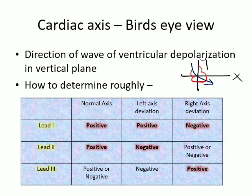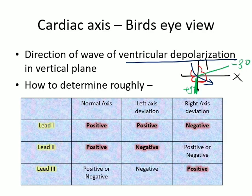The current of ventricular depolarization is directed towards the apex. The normal values of cardiac axis lie between minus 30 to plus 90 degrees. If you are asked in your practical exam where the normal cardiac axis lies in the vertical plane, the answer is between minus 30 to plus 90 degrees.